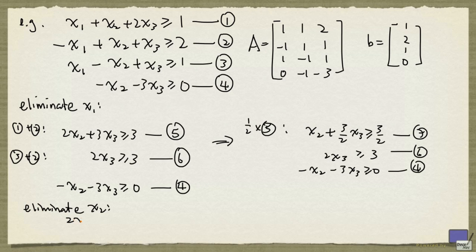And now we can eliminate x2. So again we copy down any inequality that has no x2. And now there's only one pair of inequalities that we can use to form a new inequality. We just take 7 plus 4, and that will give us the following.